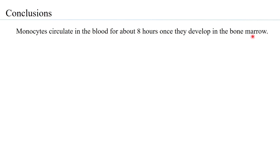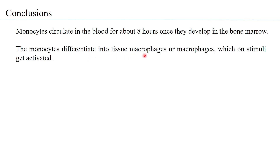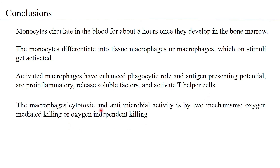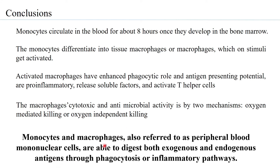In conclusion: monocytes circulate in the blood for about eight hours after being developed in the bone marrow as pro-monocytes, then differentiate into tissue macrophages or circulating macrophages, which on stimulation get activated. Activated macrophages have enhanced phagocytic and antigen-presenting potential; they are pro-inflammatory, release soluble factors, and activate T helper cells. Their cytotoxic and antimicrobial activity occurs by two mechanisms: oxygen-mediated or oxygen-independent killing. Monocytes and macrophages, referred to as peripheral blood mononuclear cells, digest both exogenous and endogenous antigens through phagocytosis or inflammatory pathways.